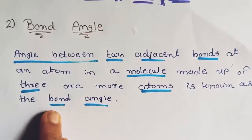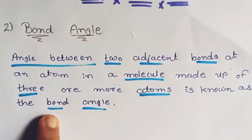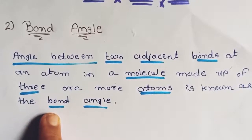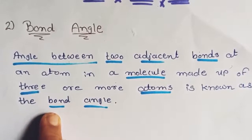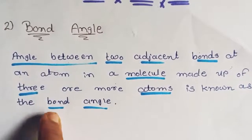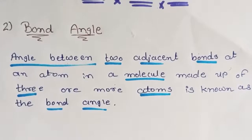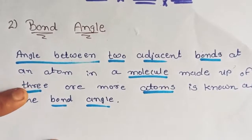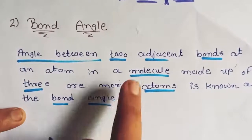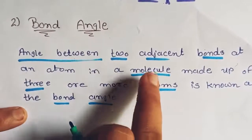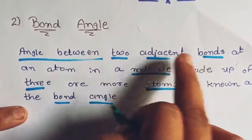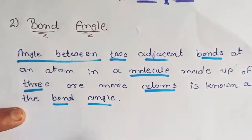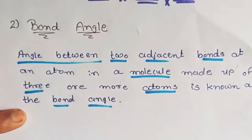Bond angle can only be found when the molecule has 3 or more atoms — not fewer than 3. If only 2 atoms are present in your molecule, you cannot find the bond angle. That means when 3 or more atoms are present in a molecule, the angle formed between two adjacent bonds is called the bond angle.